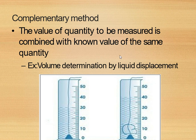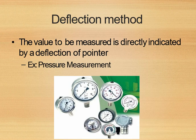In the deflection method, the value to be measured is directly indicated by a deflection of a pointer. You may have seen an analog speedometer on older bikes — the value to be measured is directly indicated by a pointer. If you are running your bike at 50 kilometers per hour, the pointer deflects to show 50 kilometers per hour, proportional to your speed. Such a method is called the deflection method.